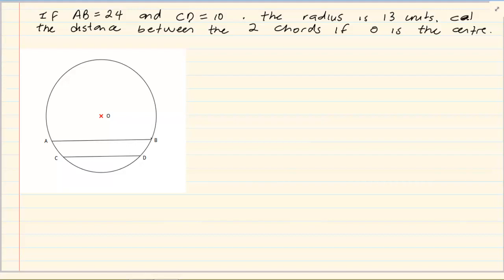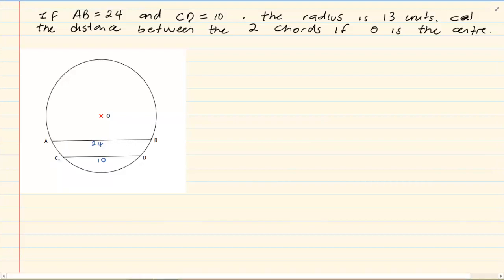Right, let's take the next example. It says AB is 24, CD is 10. Then they tell us the radius is 13 units. Now, that would become very important because the radius means I'm coming from the center. So, the radius is 13. Now, if it's 13 there, then it is also 13 here. Radius is a line from the center to the circumference, so it is also 13 here.